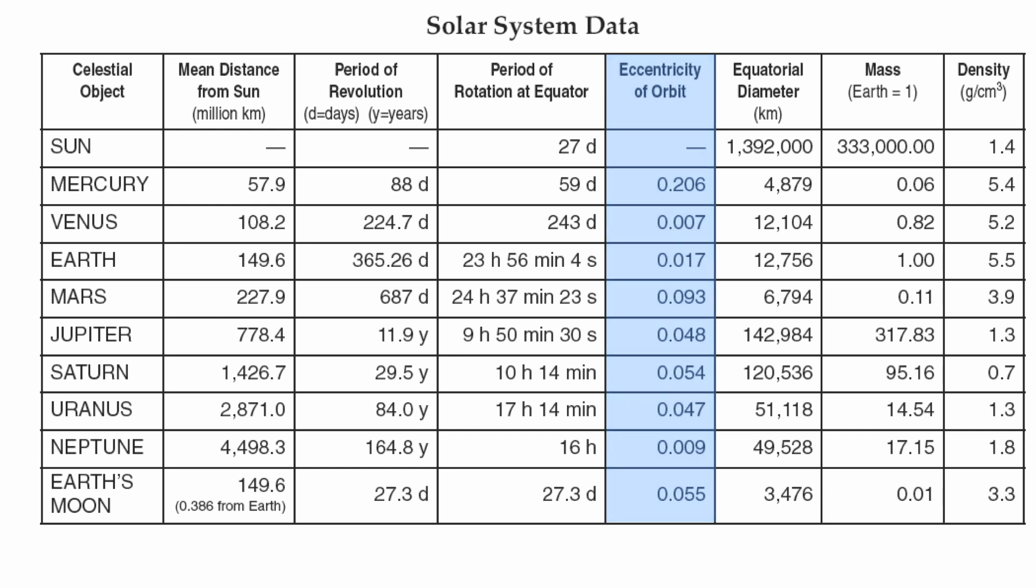Next is going to be the equatorial diameter. This is basically going to give you a relative size in how big or how small the planets are. You notice that Mercury, Venus, Earth, and Mars, your terrestrial planets, are quite small. Jupiter, Saturn, Uranus, Neptune, your Jovian planets, are quite large.